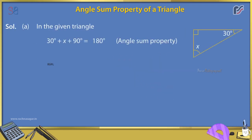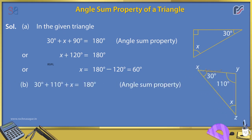Example 4: Find the value of x. Solution A: In the given triangle, 30° + x + 90° = 180° (angle sum property). So x + 120° = 180°, giving x = 60°. Solution B: 30° + 110° + x = 180° (angle sum property). So 140° + x = 180°, giving x = 40°.